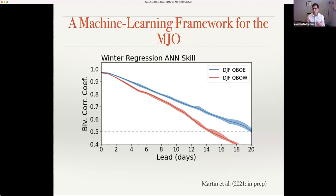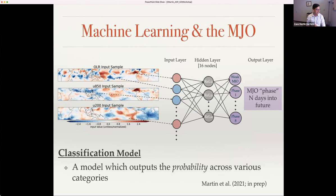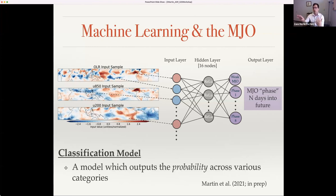I want to highlight another approach we took to show different ways machine learning models can be used. This second framework has very similar input but instead of predicting a deterministic index value, we're predicting the probability that the MJO will be in a certain category: a weak MJO phase where the RMM amplitude is less than one, or one of the eight RMM phases describing where the MJO is in its life cycle. This is a simple model outputting probabilistic forecasts.